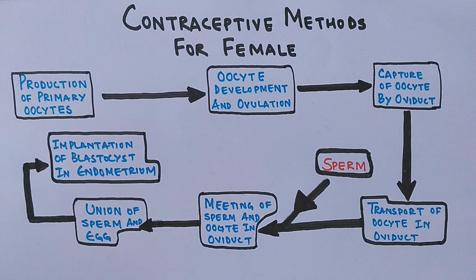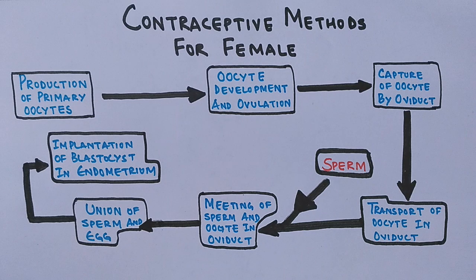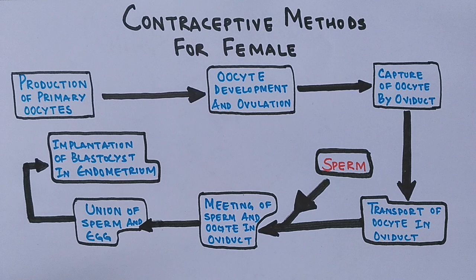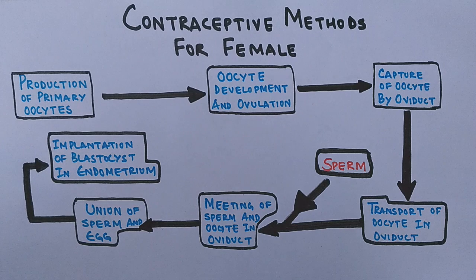These events can be halted at various stages — either between production of primary oocytes and ovulation, or between ovulation and capture of oocyte, or during transport, or by using spermicide or other methods. Let's see what kind of methods are available as contraceptives for females.